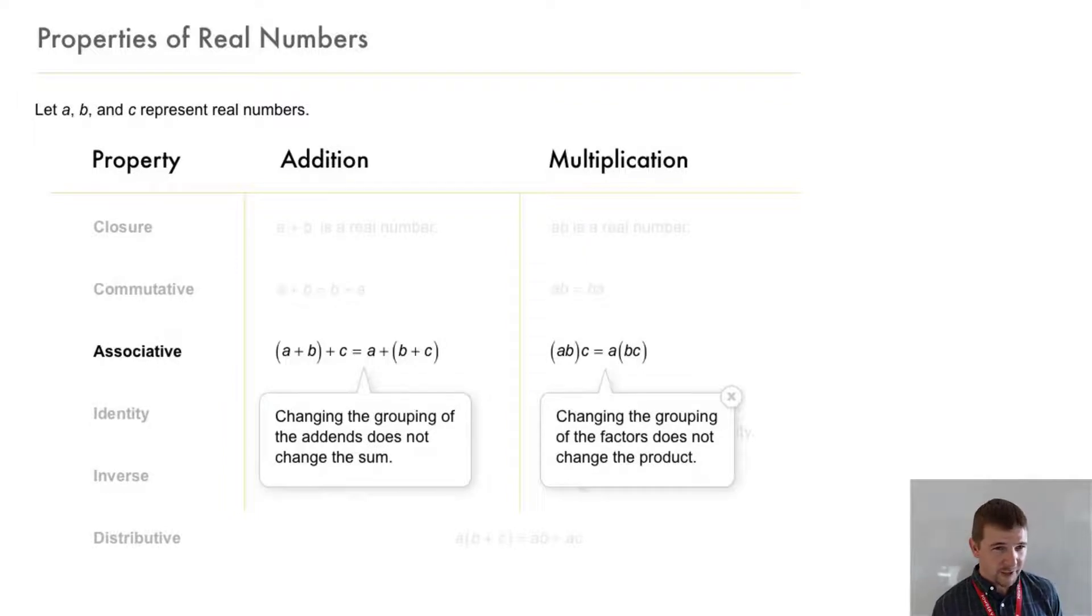The associative property of addition says that the quantity a plus b plus c is equivalent to a plus the quantity b plus c. So we're just associating different variables first and performing that operation before the other, but we end up with equivalent values. Similarly with multiplication, the quantity a times b times c is equivalent to a times the quantity b times c.